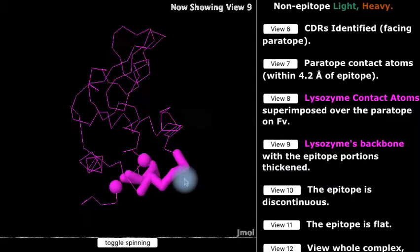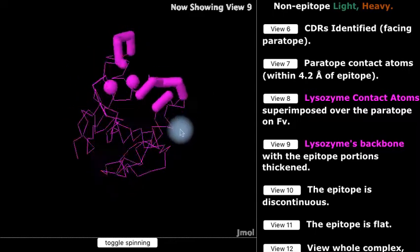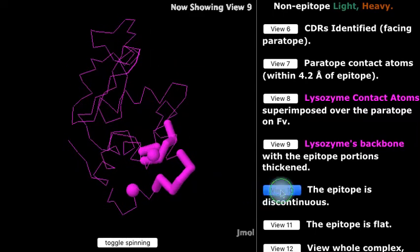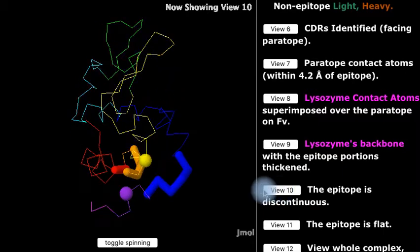Here we see the lysozyme antigen epitope as thickened portions of the lysozyme polypeptide backbone. Now the lysozyme polypeptide backbone is colored by what is called the amino to carboxy rainbow coloring scheme. The amino terminus is blue, the carboxy terminus is red, and intermediate parts follow the spectral colors of the rainbow.